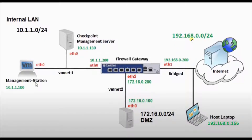Let me recap what we have done in today's tutorial. We created vmnet1 and vmnet2. The bridge network adapter was already there. On vmnet1 we assigned the network address 10.1.1.0/24, and on vmnet2 we assigned 172.16.0.0/24. In the next tutorial we will download the OS, install Gaia OS, designate one virtual machine as checkpoint management server and another as checkpoint gateway. We will assign the created VM networks — vmnet1 to Ethernet 0, vmnet2 to Ethernet 2, and the bridge connection to Ethernet 1 of the firewall gateway.